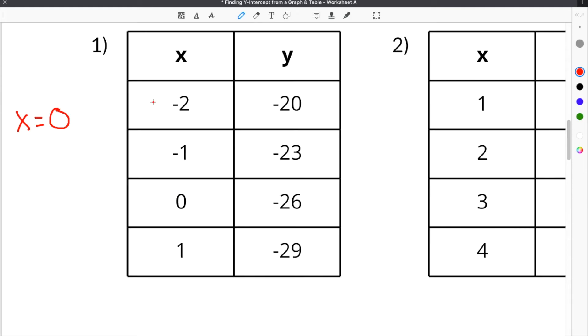So in the case of our first example, we can look right at the table. We can see that our x value of 0 is given to us and we can see that y is negative 26 when x equals 0. That means that the y-intercept for this table will be negative 26 because we already know when x is 0, the y is negative 26 and it's that easy.